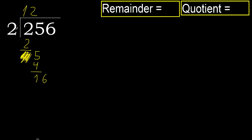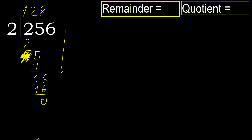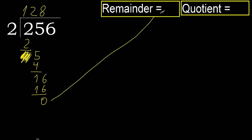16. 2 multiplied by 8 — 16, is not greater. Subtract, 0. Next. There is no number, therefore finish it.